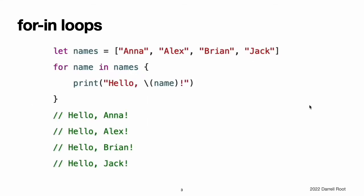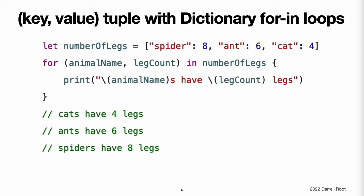For-in Loops. You use the for-in loop to iterate over a sequence, such as items in an array, ranges of numbers, or characters in a string. You can also iterate over a dictionary to access its key-value pairs. Each item in the dictionary is returned as a key-value tuple when the dictionary is iterated, and you can decompose the key-value tuple's members as explicitly named constants for use within the body of the for-in loop.